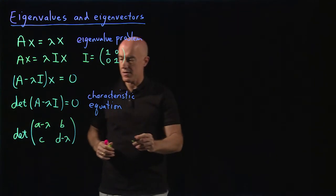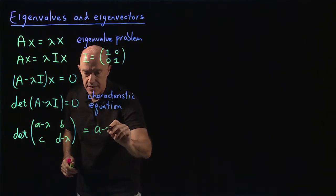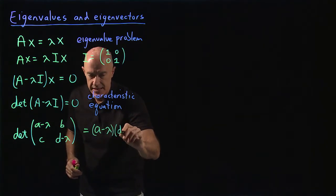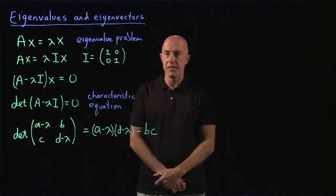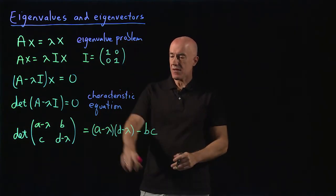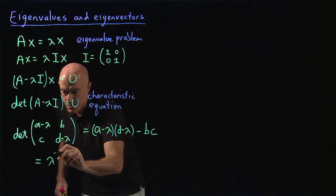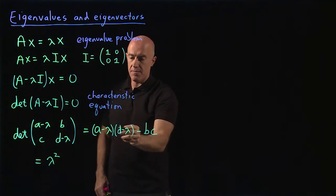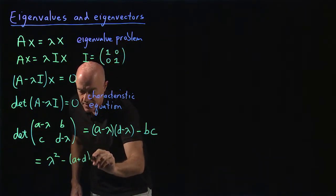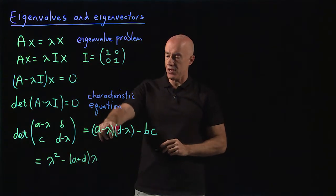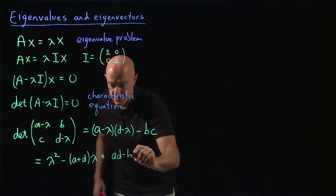The determinant is computed by multiplying the diagonal elements, A minus lambda times D minus lambda, and then subtracting the product of the off-diagonal elements, minus B times C. Expanding this multiplication gives lambda squared, then the cross terms minus A lambda minus D lambda, which is minus A plus D times lambda, and then the scalar term A times D minus B times C.